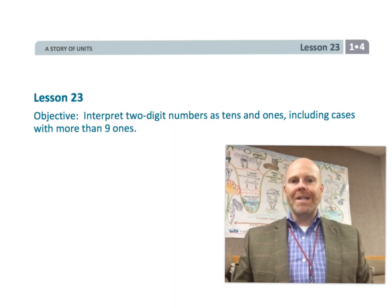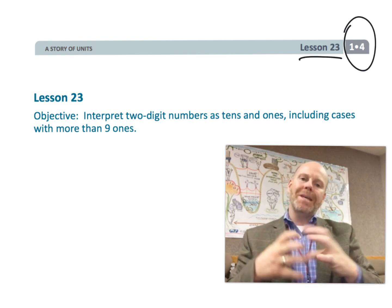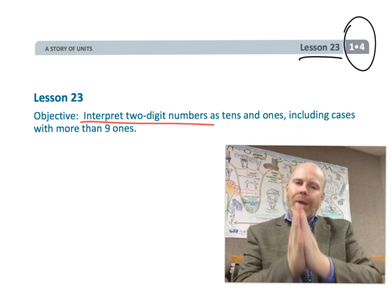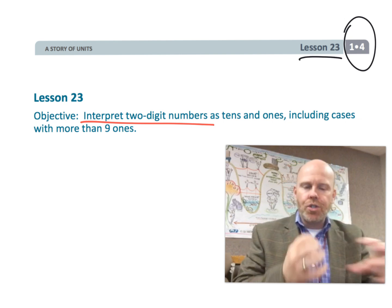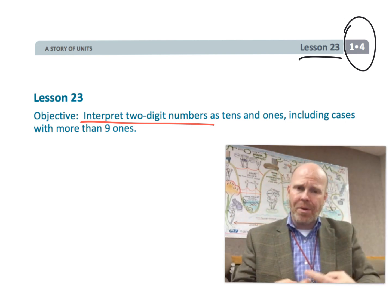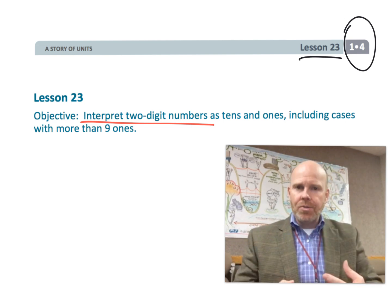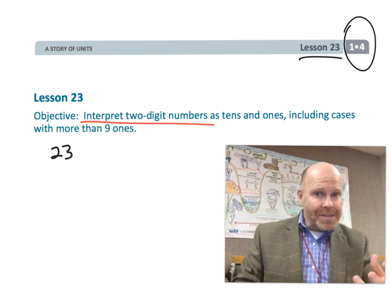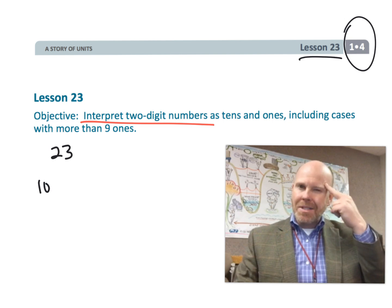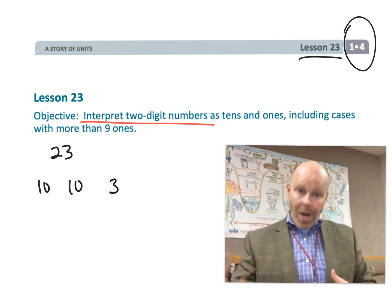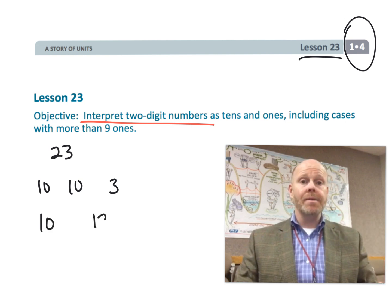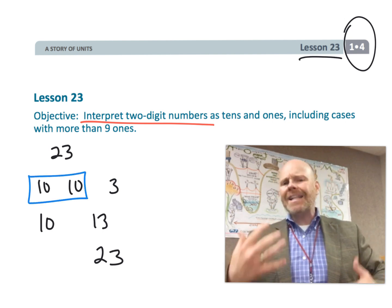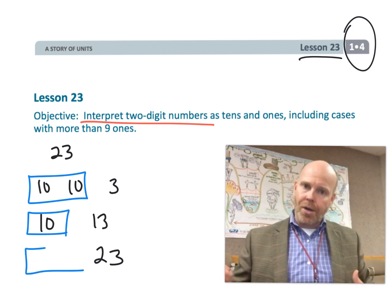This is first grade, module 4, lesson 23. In this lesson, students are going to be interpreting two-digit numbers in a variety of ways. We are starting to lay the groundwork for students to regroup when adding using the standard algorithm. The idea is we want students to see that 23 is not only two tens and three ones, but also one ten and thirteen ones, or twenty-three ones with no tens at all. That's the kind of flexibility this lesson is going to start introducing.